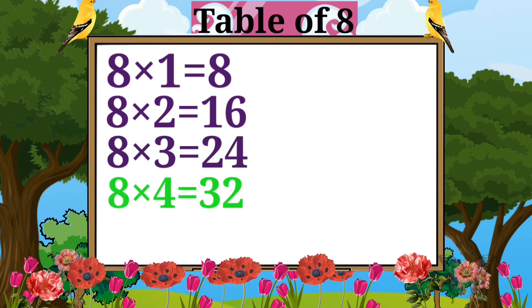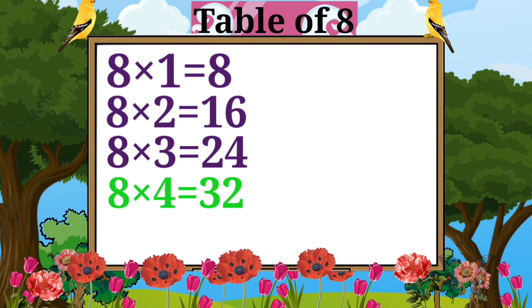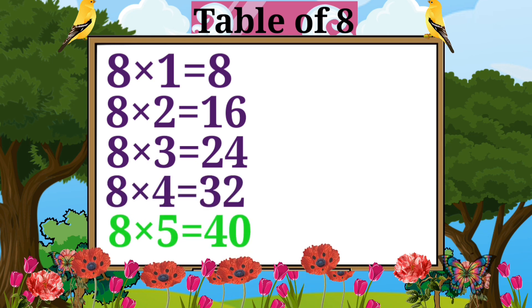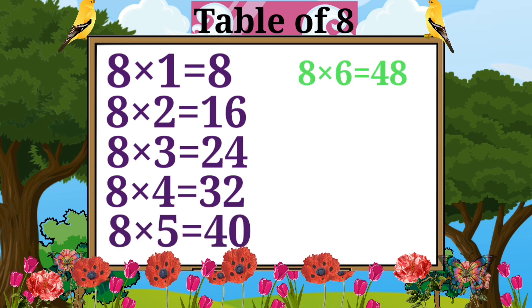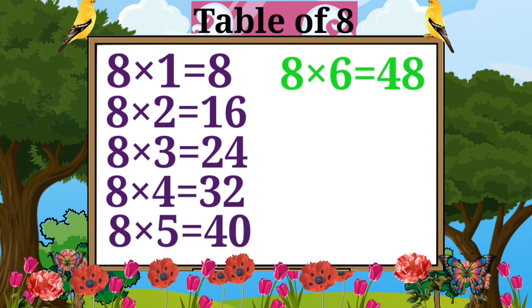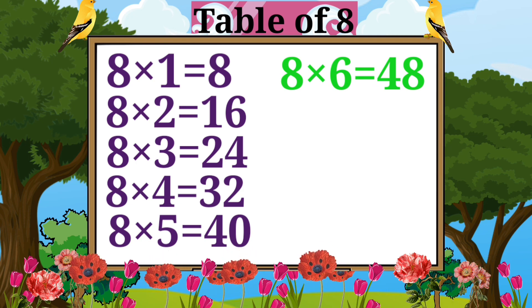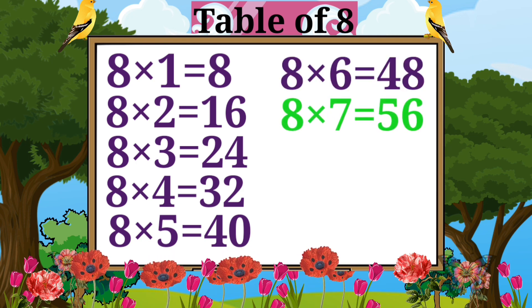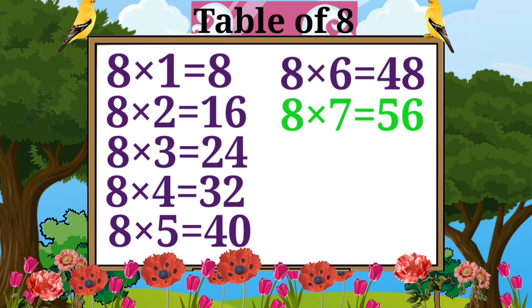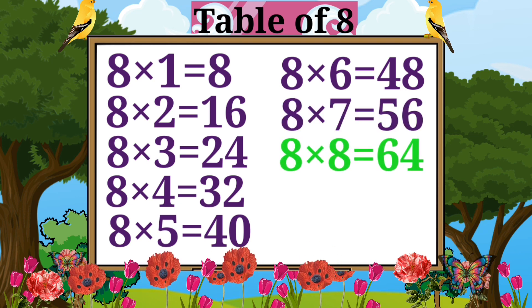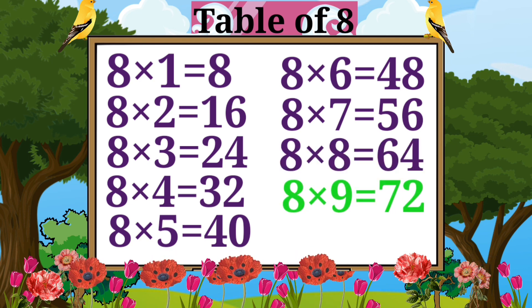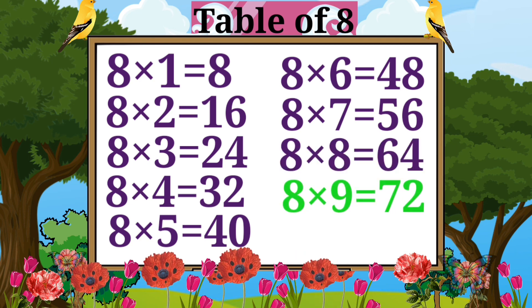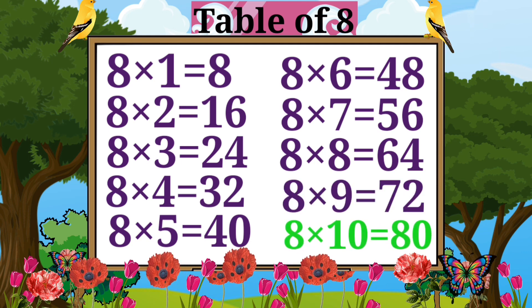Eight fours are thirty-two. Eight fives are forty. Eight sixes are forty-eight. Eight sevens are fifty-six. Eight eights are sixty-four. Eight nines are seventy-two. Eight tens are eighty.